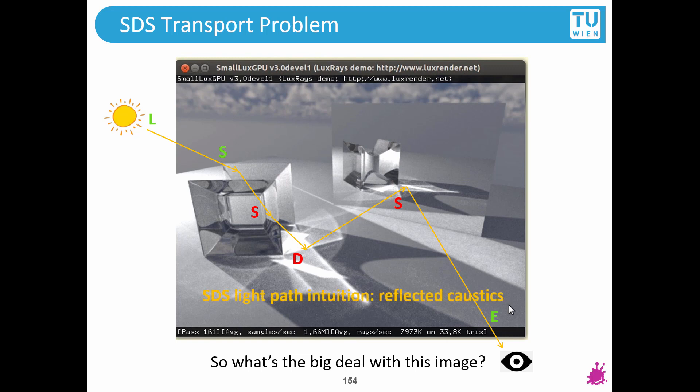What is the intuition of this? It is reflected caustics, because one S and one D gives you caustics, like we discussed before, and then if you have another specular bounce, then this says that I am seeing the caustics through the mirror. The intuition for SDS light paths is reflected caustics.